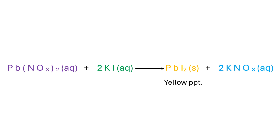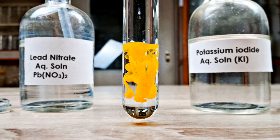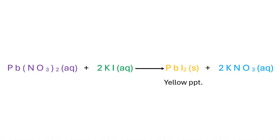In this case, lead cations exchange position with potassium ions and nitrate anions. One of the two products formed, lead iodide, is highly insoluble in water and precipitates out as a yellow color. The other product, potassium nitrate, is extremely soluble in water and remains in the aqueous medium as a clear colorless liquid.